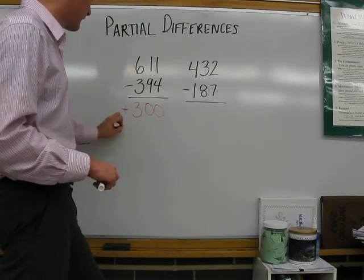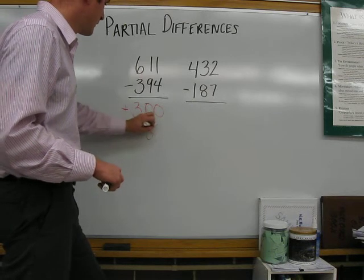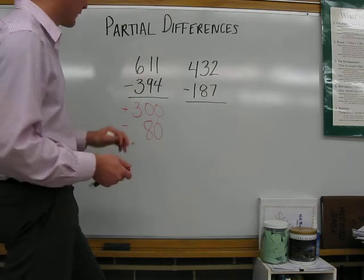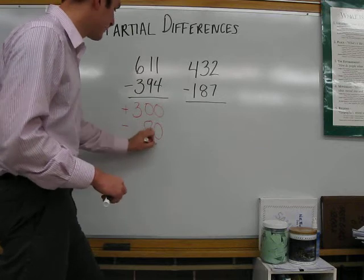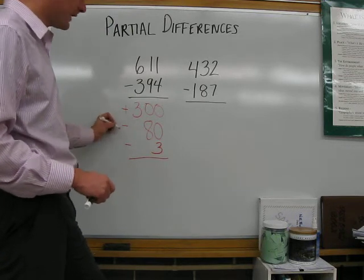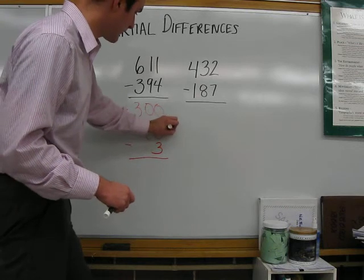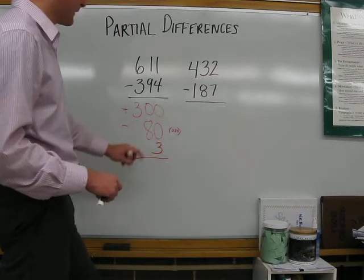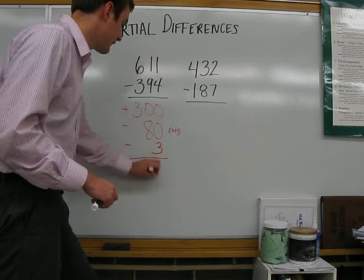10 minus 90 is negative 80, negative as if we owe it. 1 minus 4 is negative 3. So we have 300 minus 80 is 220. Minus 3 is 217.